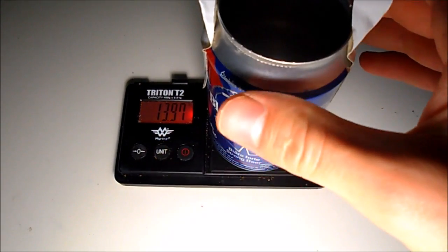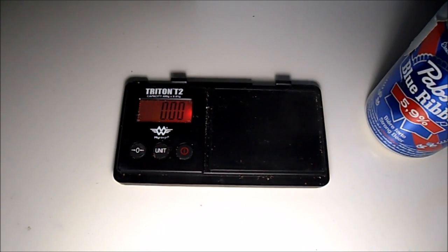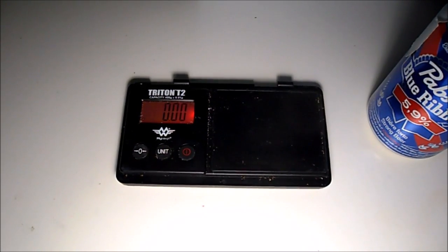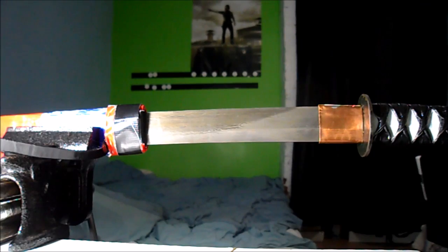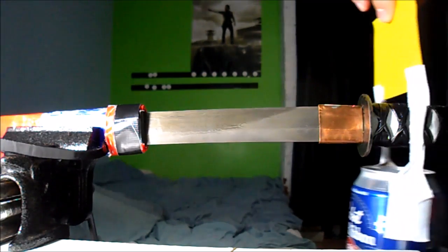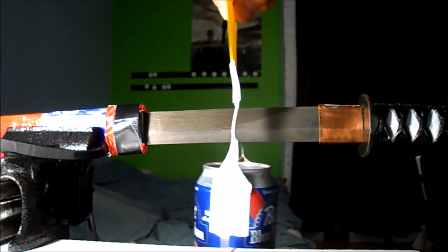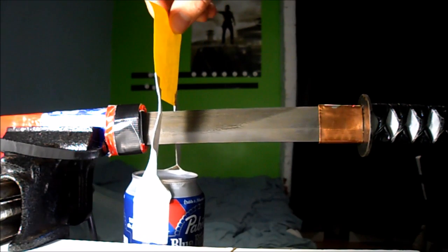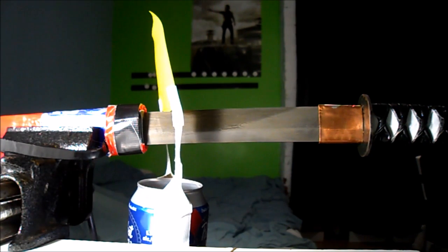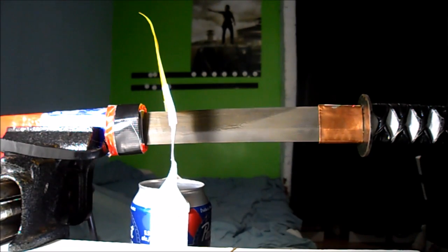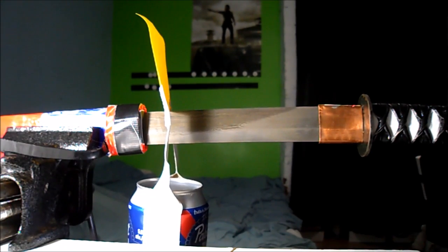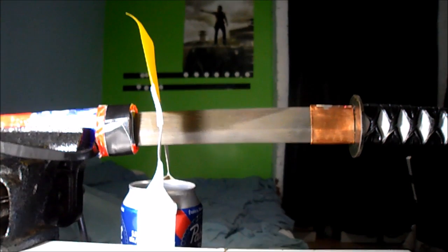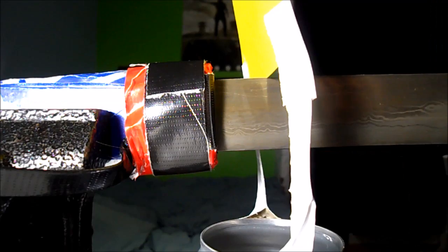Now we're going to move it over to the sword here and see how the paper cuts as water is added. The can balances perfectly fine when completely empty with the paper resting right on the edge of the sword, and a small indent is made.